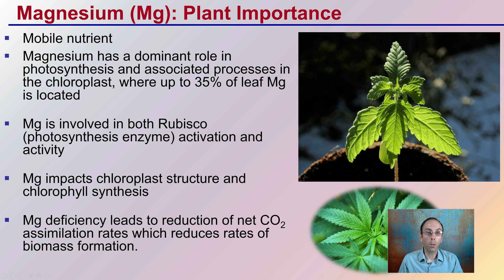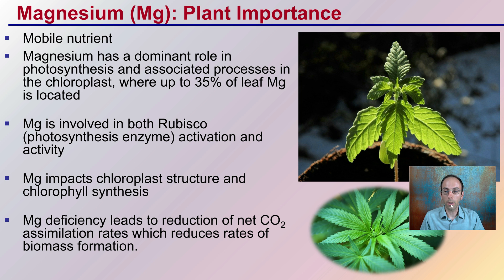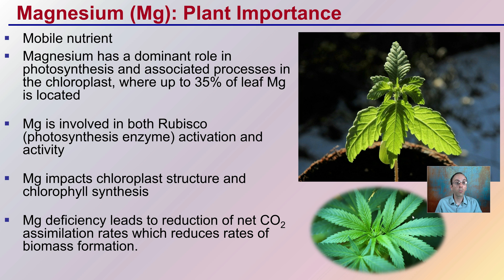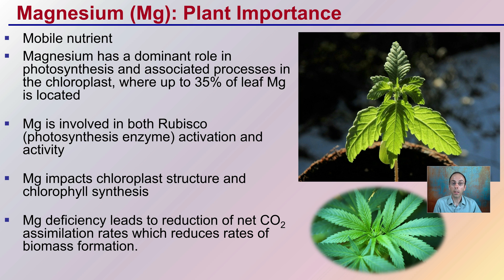Why does a plant even need magnesium is often a question growers may ask. Keep in mind that magnesium is a mobile nutrient, meaning it can move through the plant. It has a dominant role with the photosynthetic process, associated with the chloroplast — that real nice green color we typically associate with plants. That's part of the responsibility of magnesium, where up to 35% of the leaf magnesium is actually located within those chloroplasts.